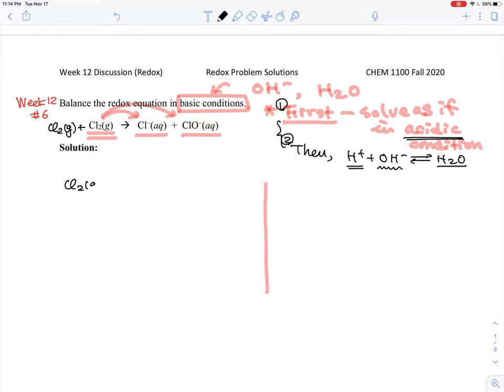Half reaction is Cl2 - forget about the phases - Cl2 gas becomes chlorine minus. That's what that is. Let's give a little bit of space between here and the second equation. Here is Cl2 becomes ClO minus. So those are the two half reactions.